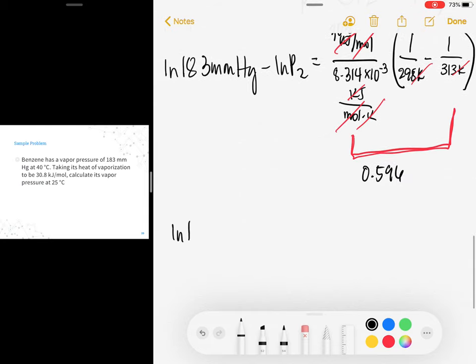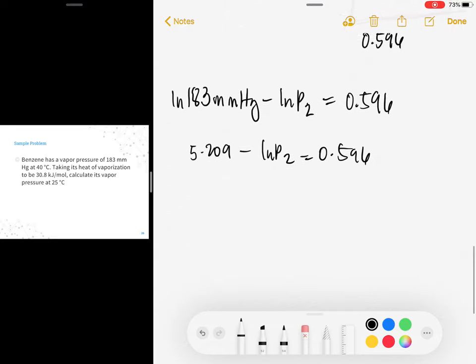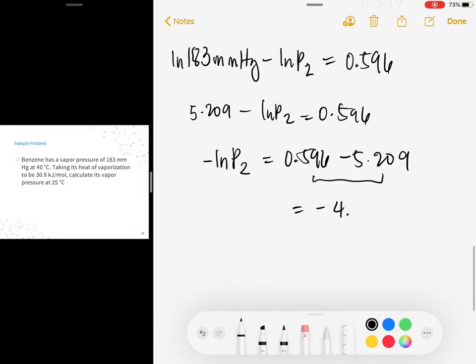Let's bring everything down. So ln(183 mmHg) minus ln(P2) equals 0.596. Simplify ln(183): it's 5.209486. Round it up to at least 3 decimal places. This becomes 5.209 minus ln(P2) equals 0.596. Let's combine like values. Transpose 5.209 to the other side of the equation. This becomes negative ln(P2) equals 0.596 minus 5.209. Simplify: 0.596 minus 5.209 equals negative 4.613.